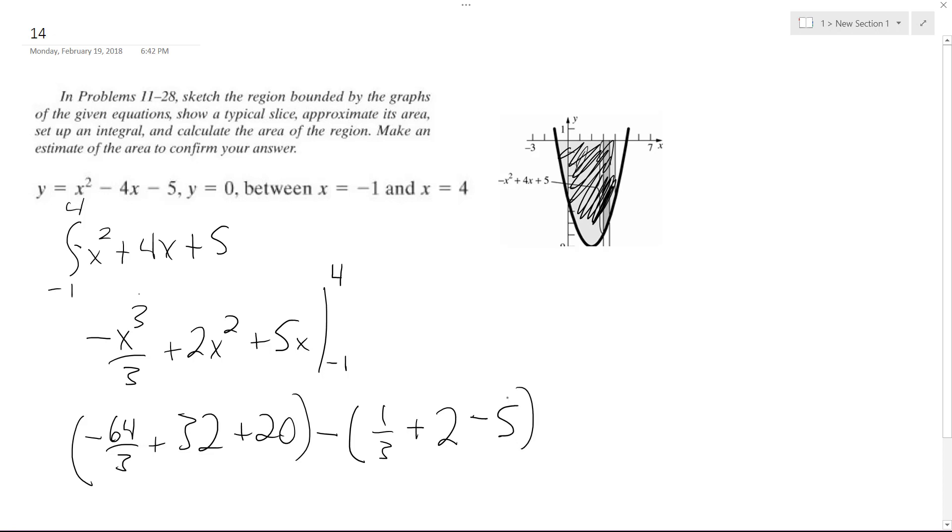Okay and so if you sum all these up, what you ultimately end up with is simply 100 over 3, which is approximately 33.3.